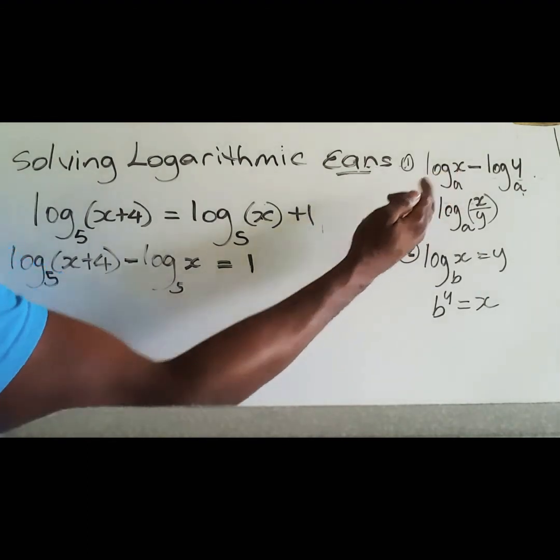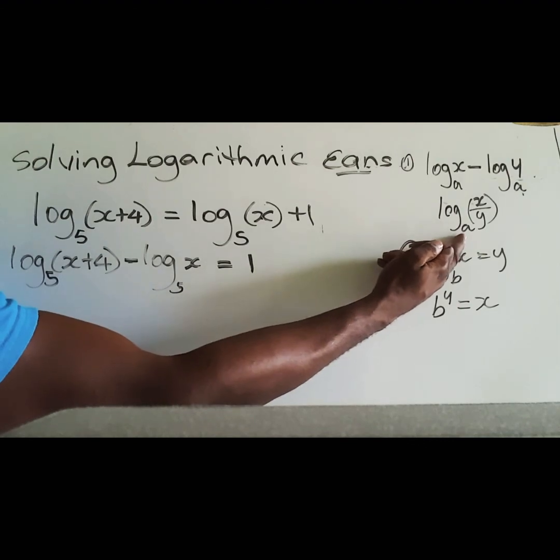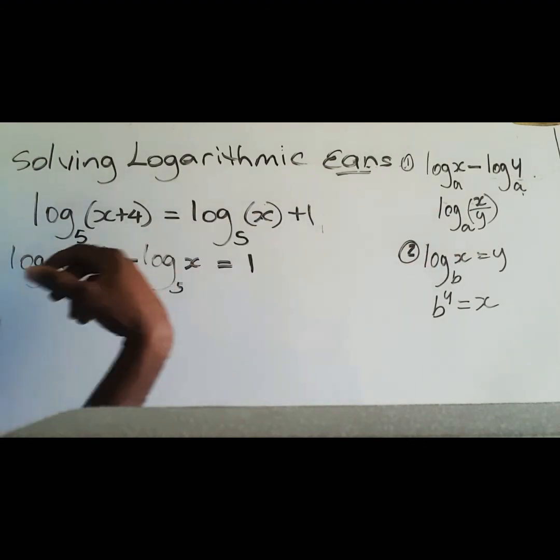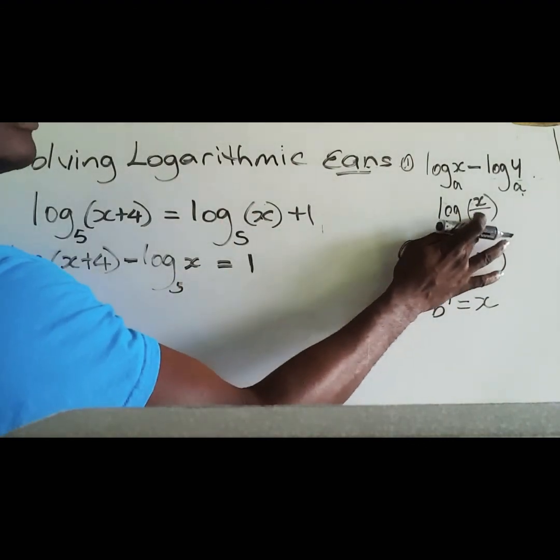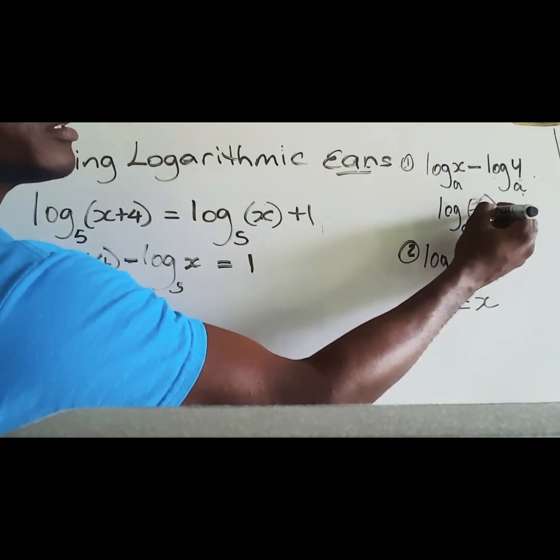So log base a of x minus log base a of y is the same thing as saying log base a of x over y. I think I wrote this wrong. Yeah, this is okay, x over y. All right, very good, it's okay.